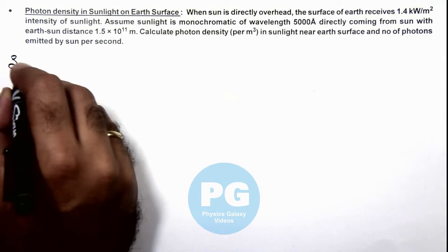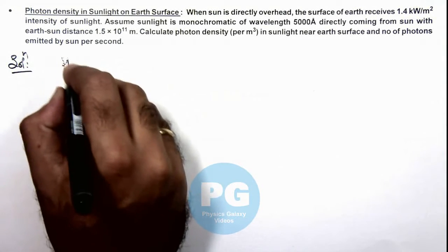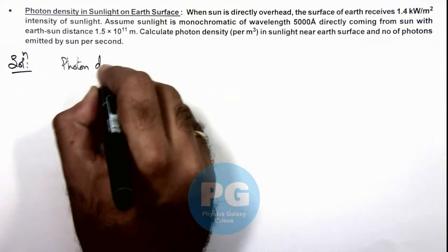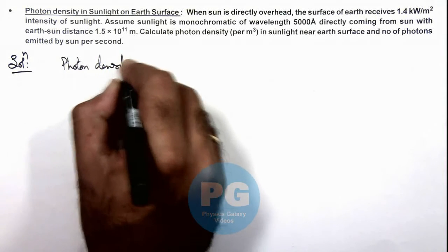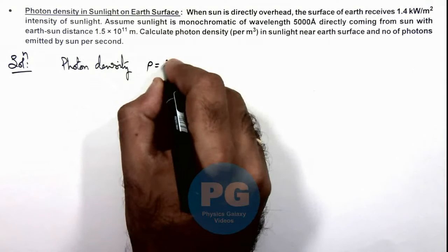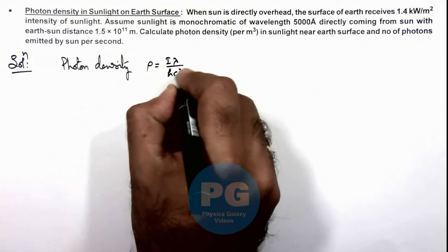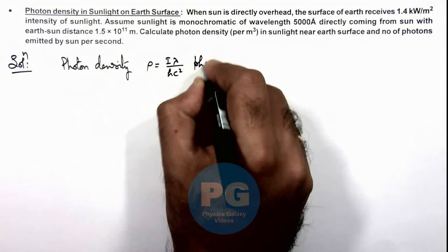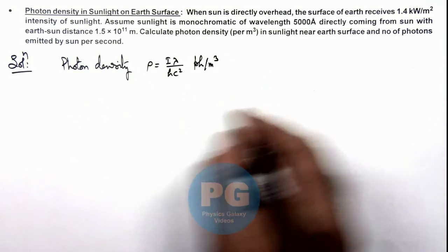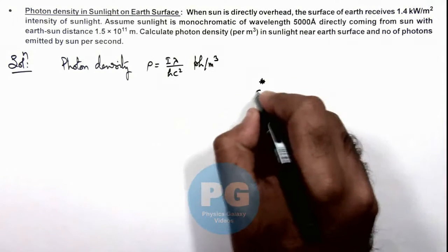Here we can recall that in concept videos we have studied about photon density, of which the expression is given as ρ = Iλ / hc², giving photons per meter cube, for light from the sun.